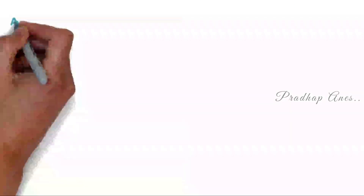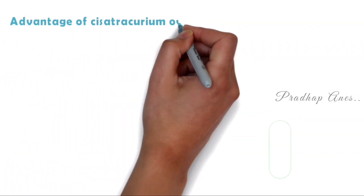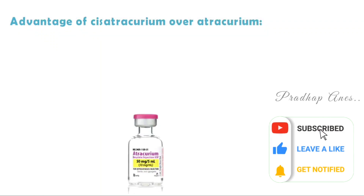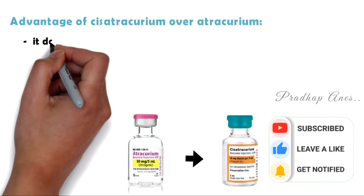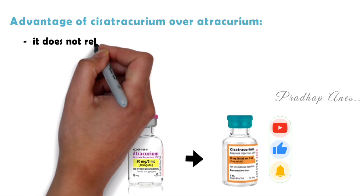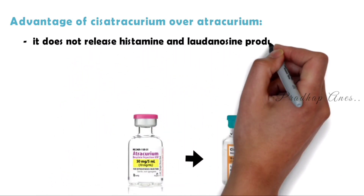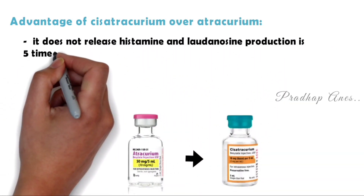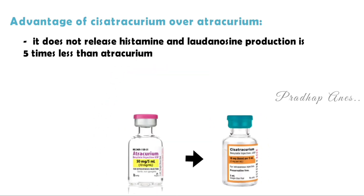Let's discuss the chief advantages of Cisotricurium over Atricurium in short. Cisotricurium does not release histamine and Laudanosine production is 5 times less than Atricurium, therefore it is always preferred over Atricurium.